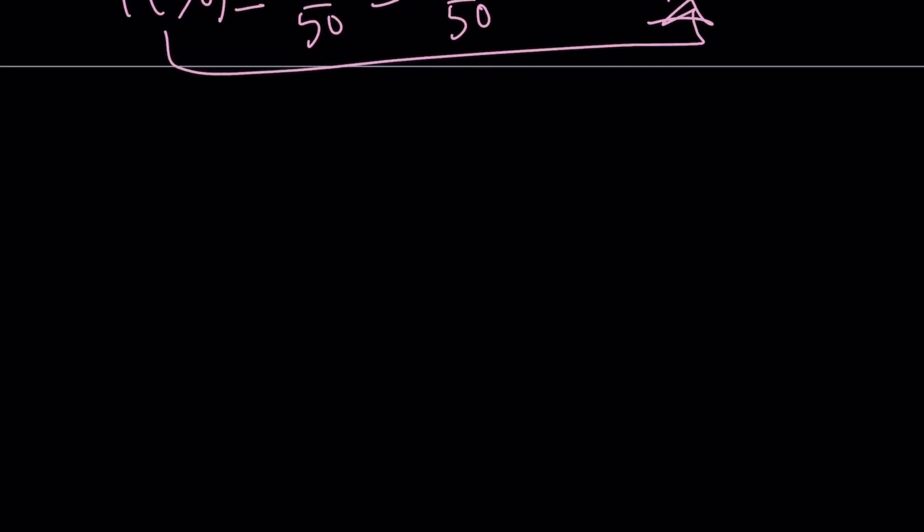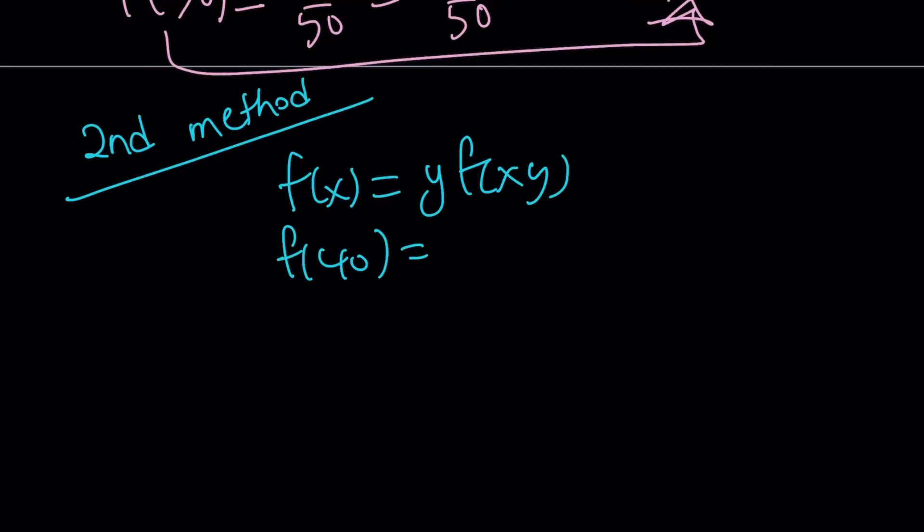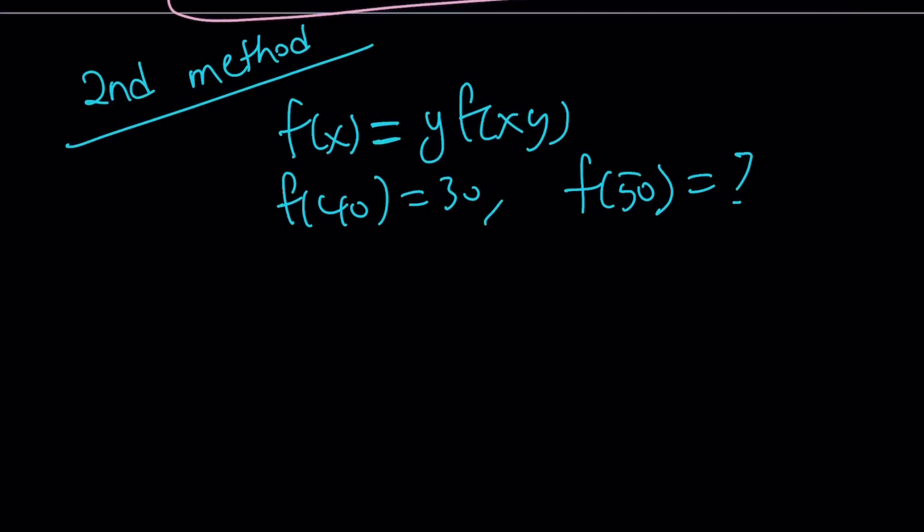Not to the end of the video yet. Let's go ahead and talk about the second method. And within the second method, I'm actually going to show you two approaches. So it's kind of like 2a and 2b. Allow me to do that. 2b or not 2b. So what are we going to do with the second method? Let me rewrite my equation. f(x) equals y f(xy). And then f(40) is given as 30. I'm supposed to find f(50). I can't remember where I've seen this problem. Probably on the web. But I think I made up the numbers.